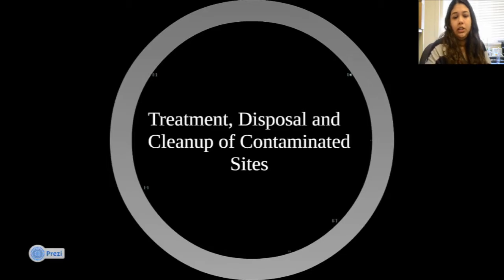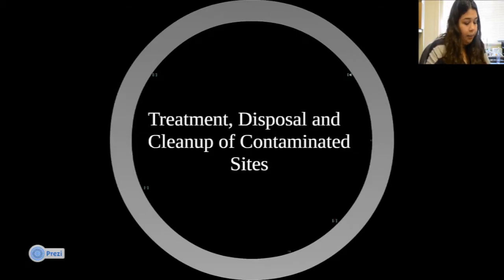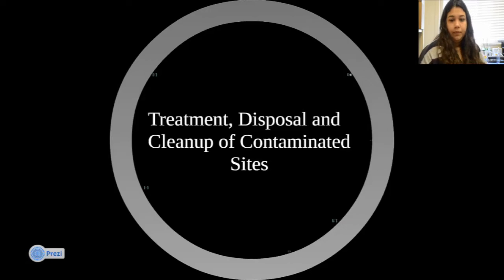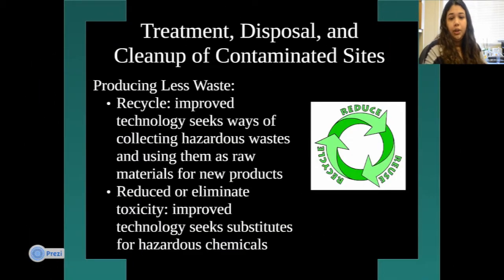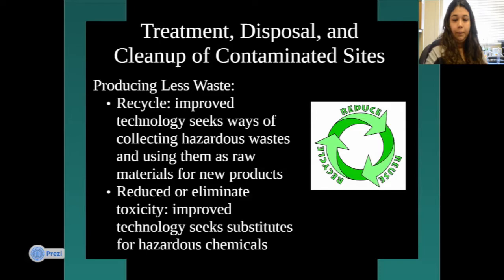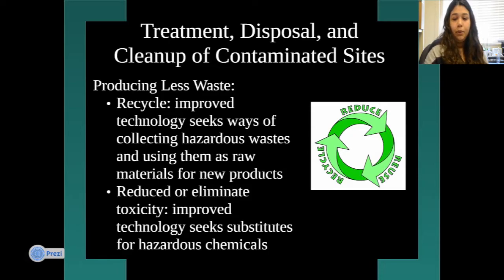The last section covers treatment, disposal, and cleanup of contaminated sites — proper methods to dispose of or clean up these sites, since many of these substances are hard to get rid of. One major approach is producing less waste. Recycling is a key strategy — it uses improved technology to collect hazardous waste and use it as raw materials for new products. Recycling cans or paper lets us use resources for longer instead of burning materials or cutting down trees.